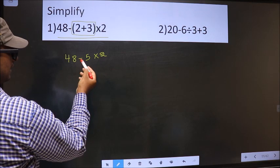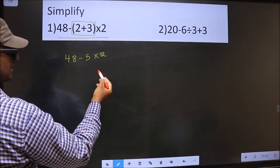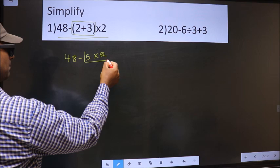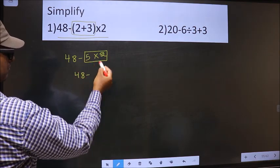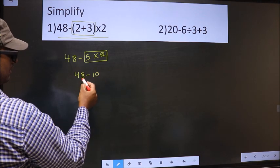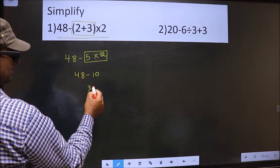Now here we have subtraction and multiplication. As per rule, we should do multiplication first. So we get 48 minus 5 into 2 is 10. 48 minus 10 is 38.